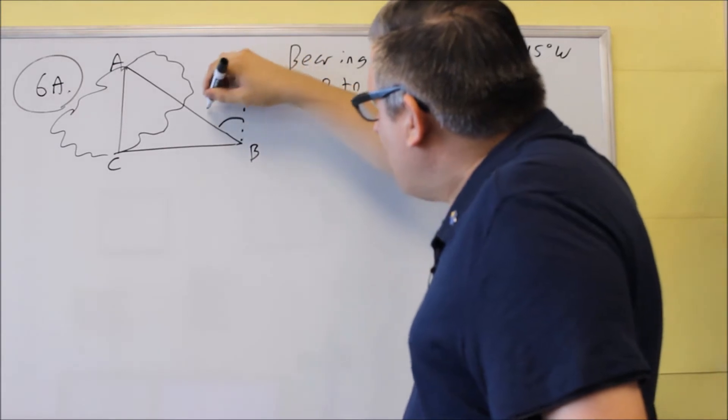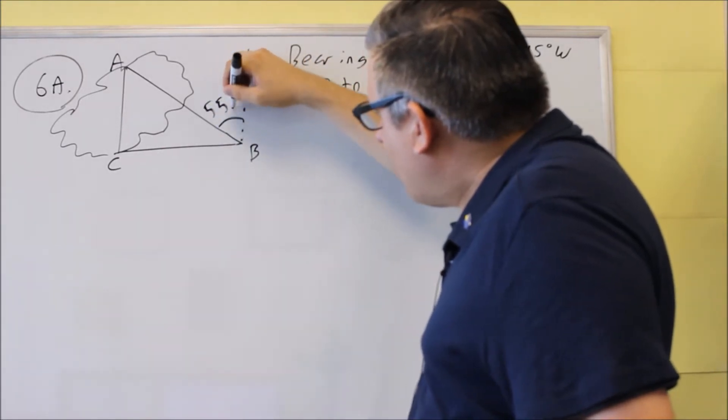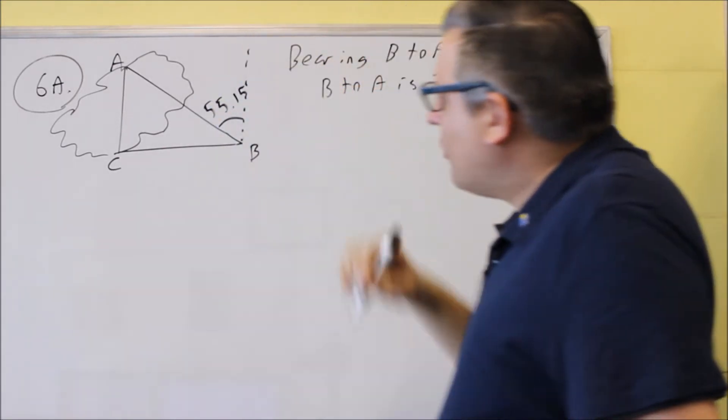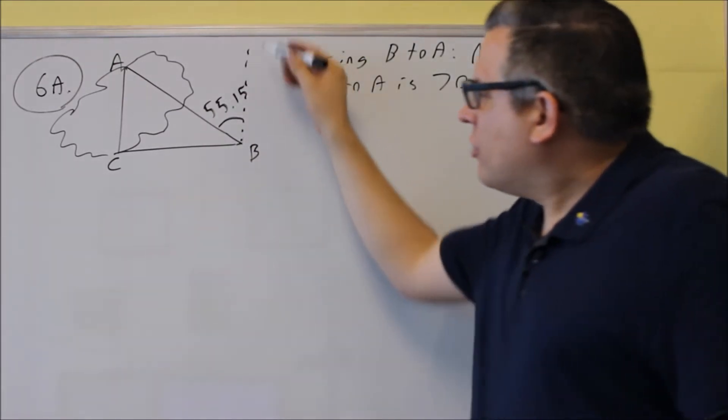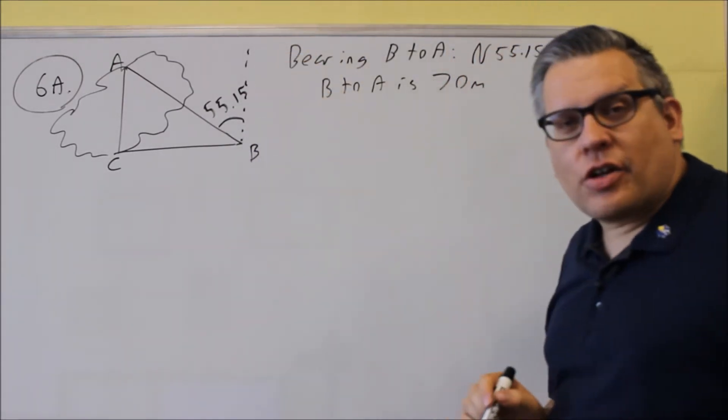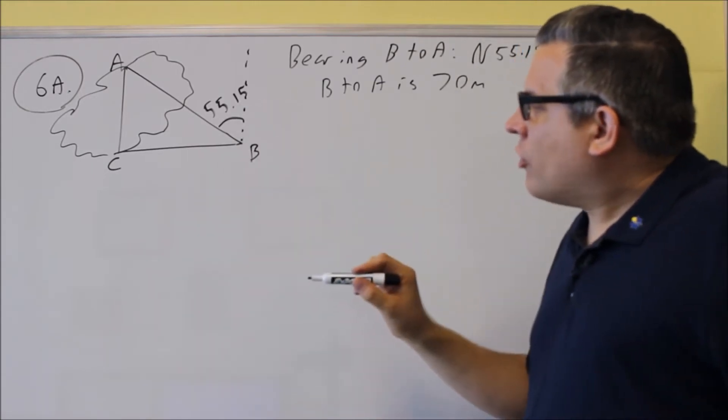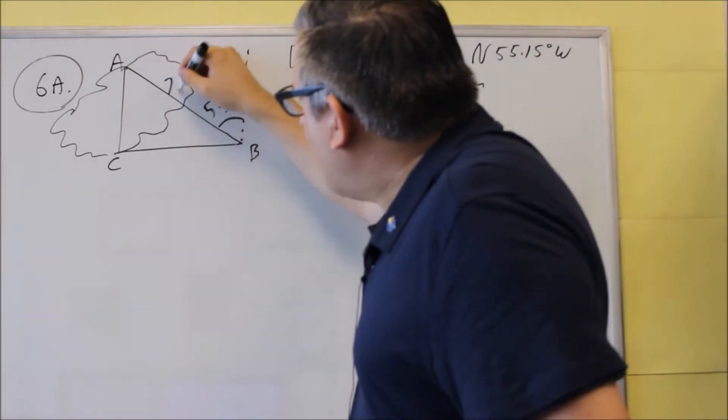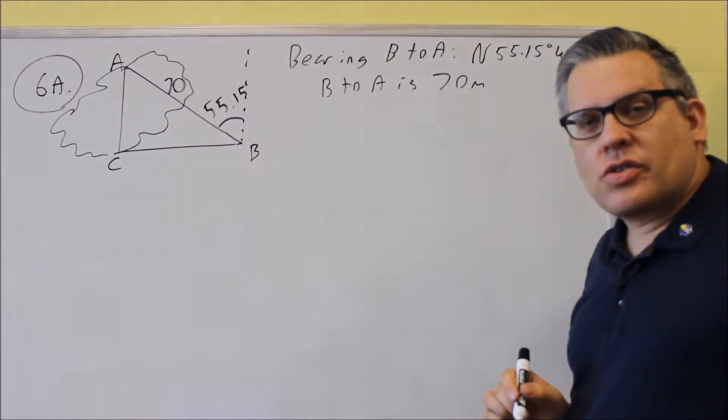This angle is 55.15. Bearing is always measured from the north or the south. So we drew in a line here that's north. 55.15 is there. And then we said that this distance from A to B is 70.